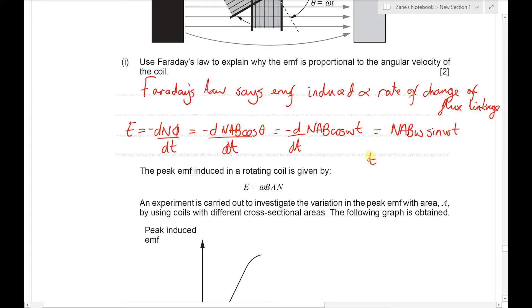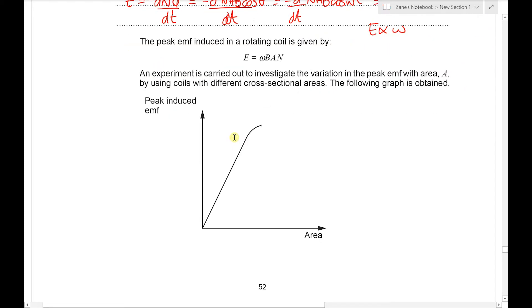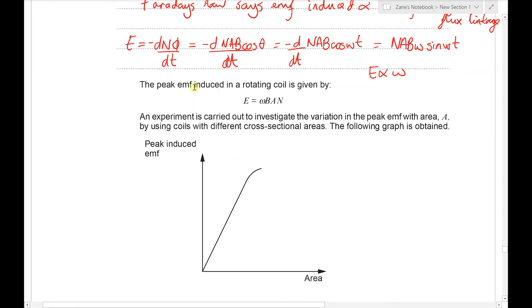So this becomes NABω sin ωt. In other words, E is proportional to ω because N and A and B, they're all constants. And you'll note this on the next part, it says the peak induced EMF in a rotating coil is given by E equals ωBAN, which is basically this part that we got at the front of our expression with the sine ωt varying between plus one and minus one.